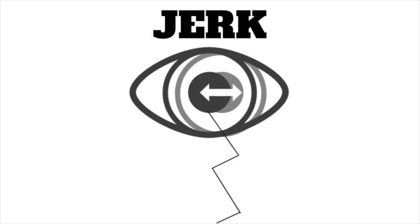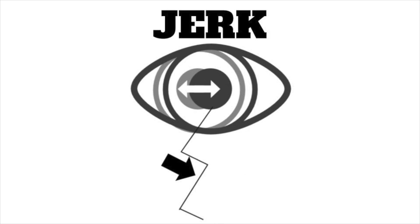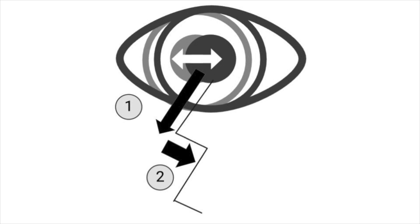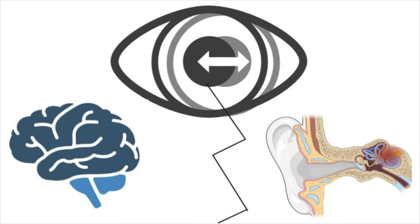Why is it called jerk nystagmus? Your eyes move slowly in one direction and quickly in the other — slowly to the right and then jerk to the left, or slowly to the left and jerk to the right. Jerk nystagmus has two components: a slow movement in one direction and a fast movement to correct it. Some jerk nystagmus patterns are typical of central causes and some are typical of peripheral. I'll tell you what's almost always peripheral, what's always central, and where you can't be sure.